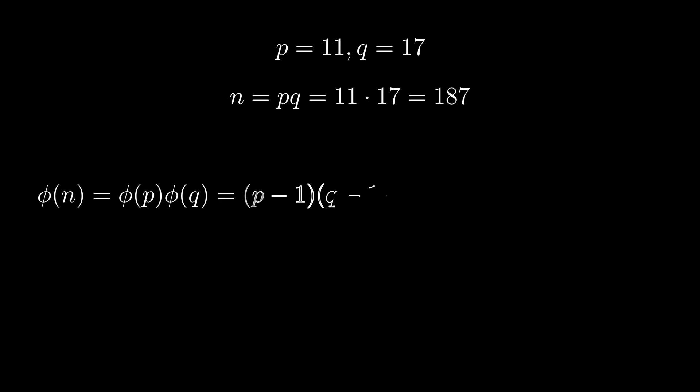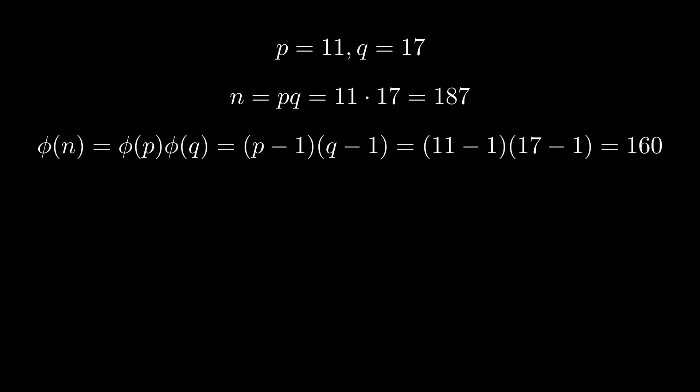Let's run through an example of generating keys. p equals 11, q equals 17. Then n is 11 times 17, which equals 187. Totient n, like I said, is hard to calculate from 187, but because we know its factors, we can do 11 minus 1 times 17 minus 1. In other words, 10 times 16, which is 160.